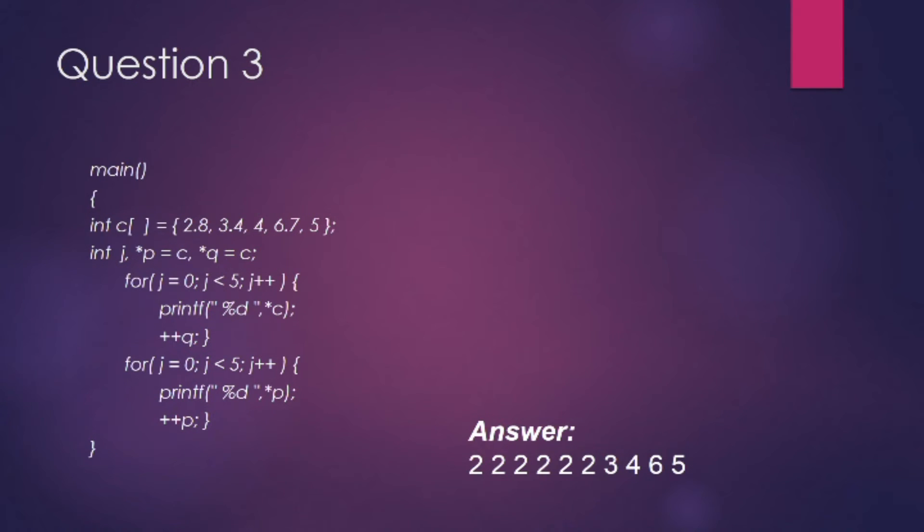In the first loop, since only q is incremented and not c, the value 2 will be printed 5 times. In the second loop, p itself is incremented and p is printed, so the values 2, 3, 4, 6, and 5 will be printed.